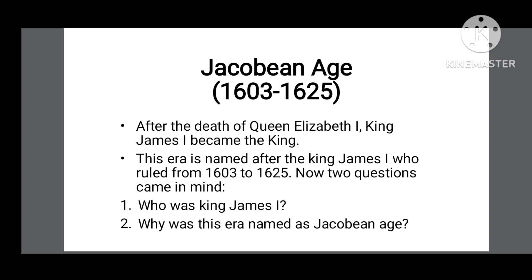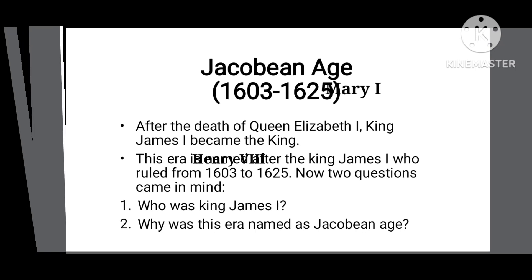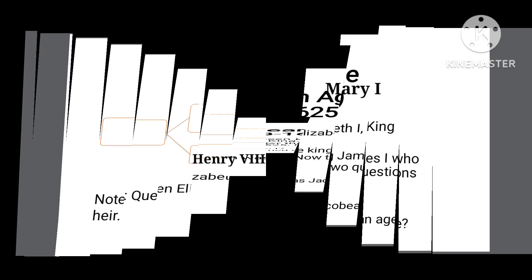Because Queen Elizabeth's time period is called the Elizabethan Age, so King James's time period is called James's age or James's era. Why is this time period called the Jacobian Age? We will answer this question in this video.